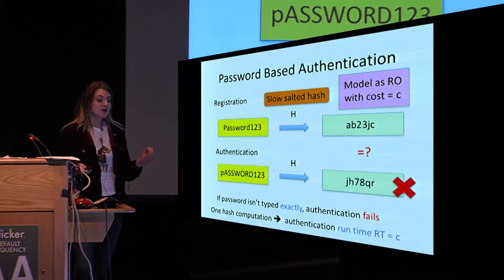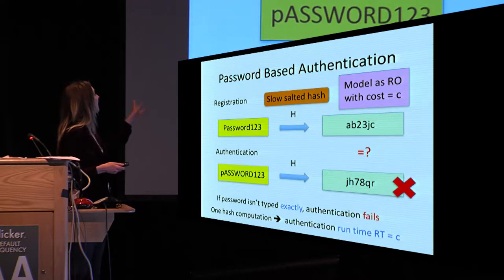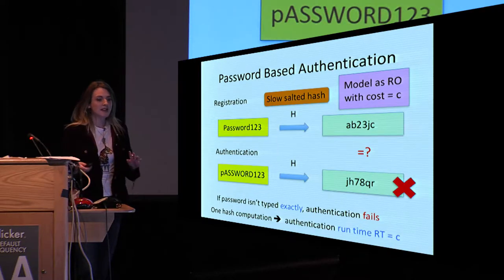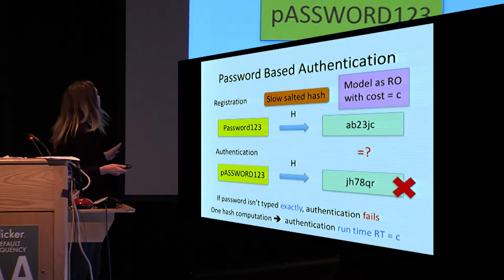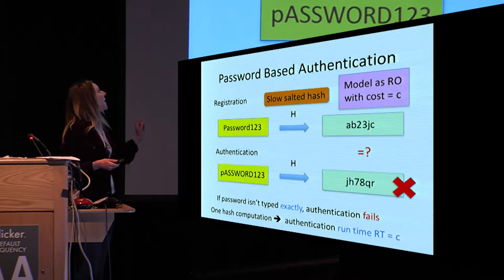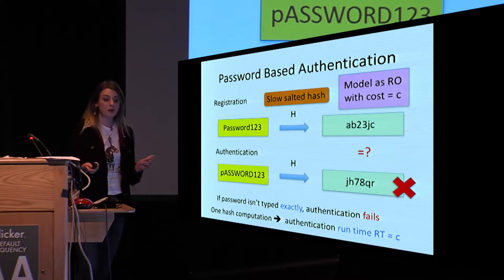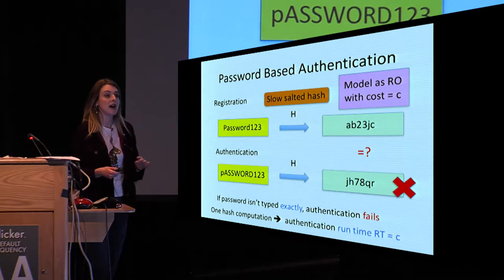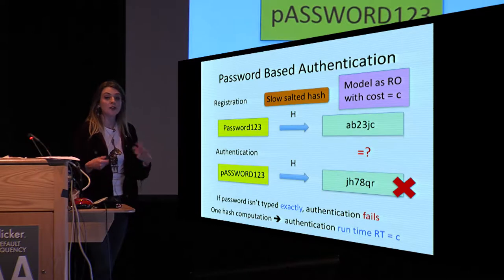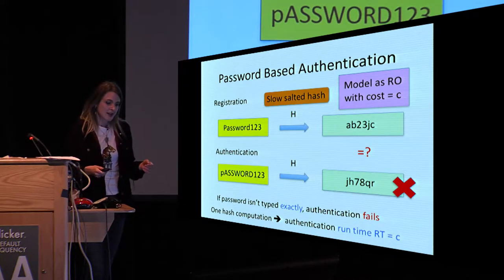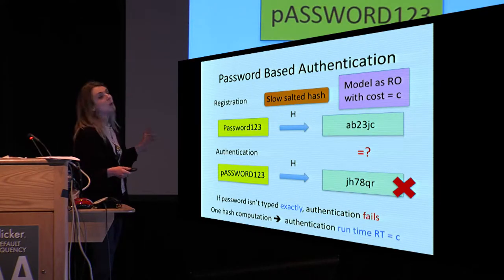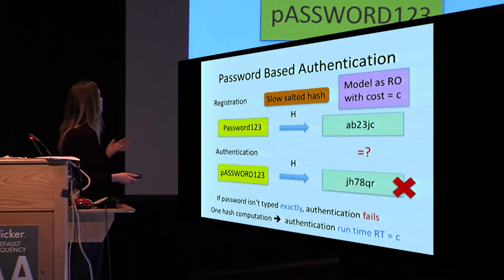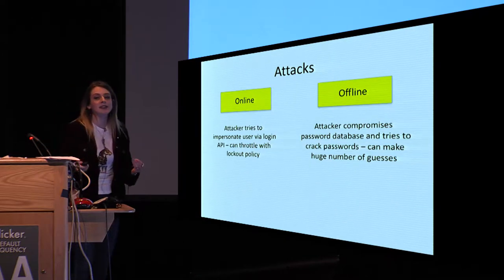When the user wishes to authenticate, they re-enter their password, which is hashed with the same slow salted hash. Authentication is granted if the resulting hash matches that which is stored. If the password is entered with any small typo or error, authentication will fail. We model the slow salted hash function as a random oracle with some associated cost C, measuring runtime in terms of the number of slow hash queries made. Authentication requires one slow hash computation, so if the hashing cost equals C, the runtime of authentication also equals C.